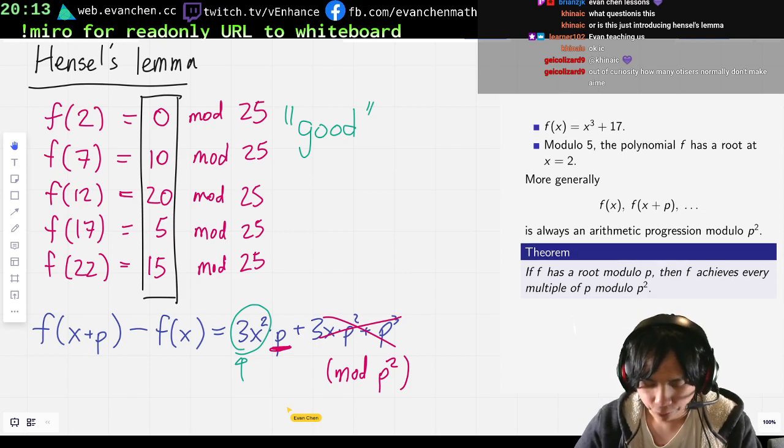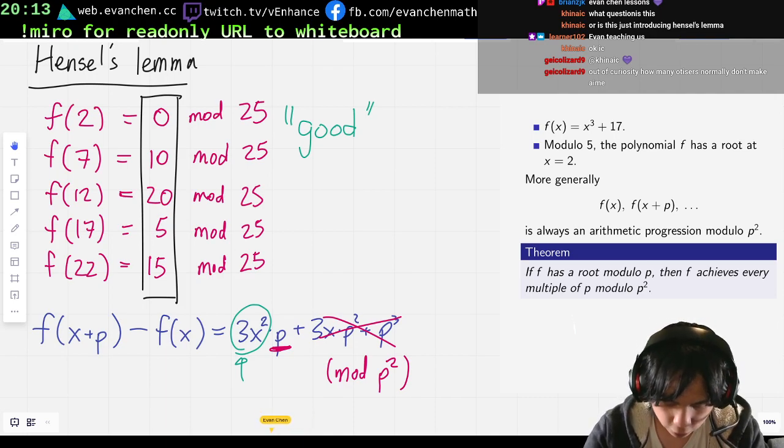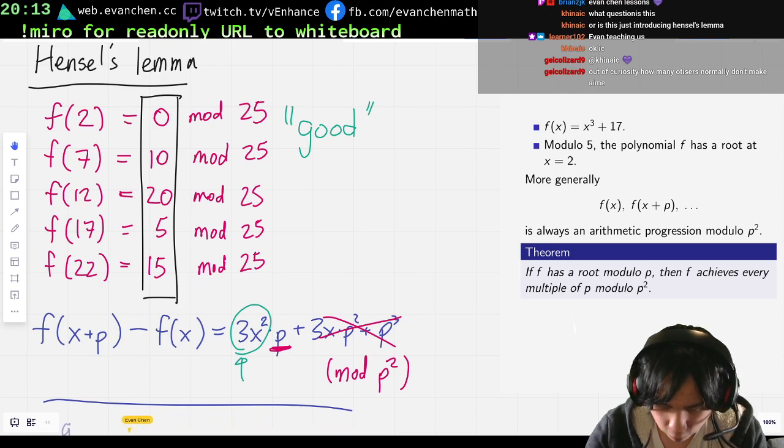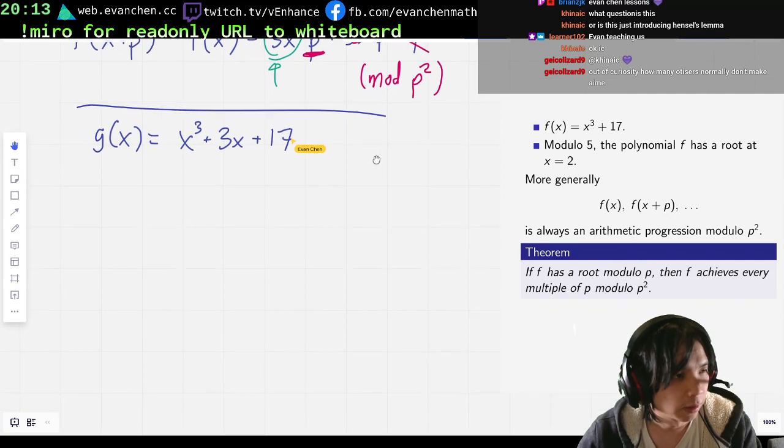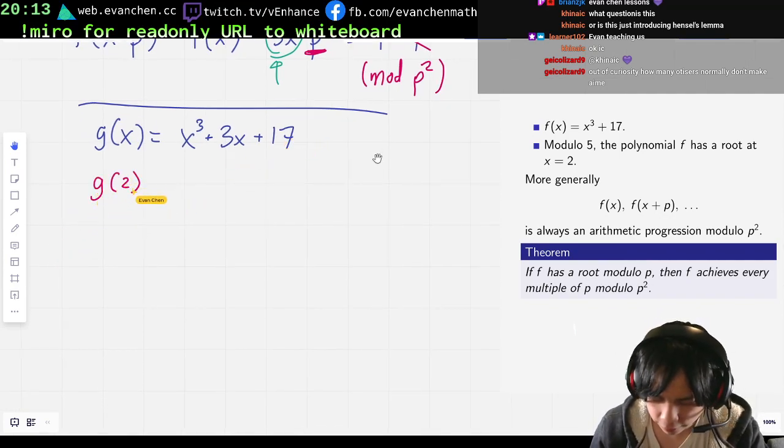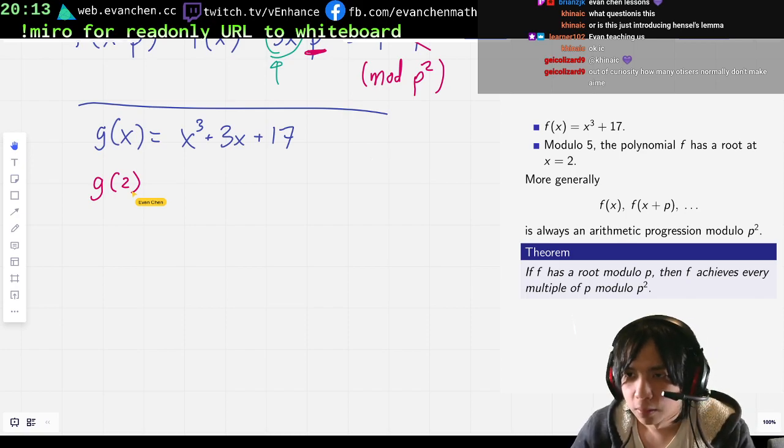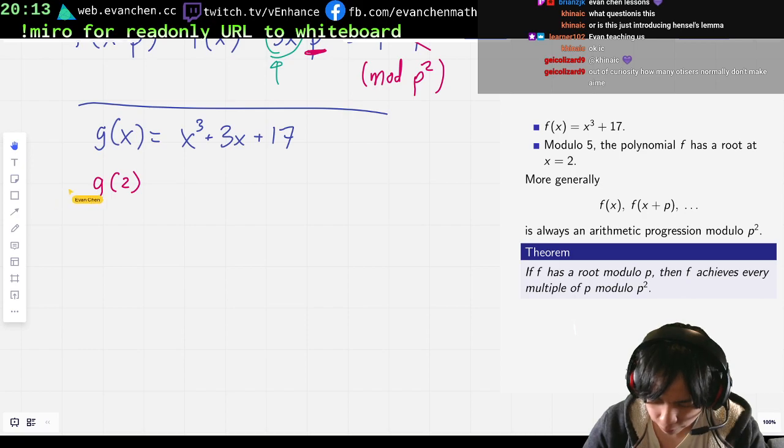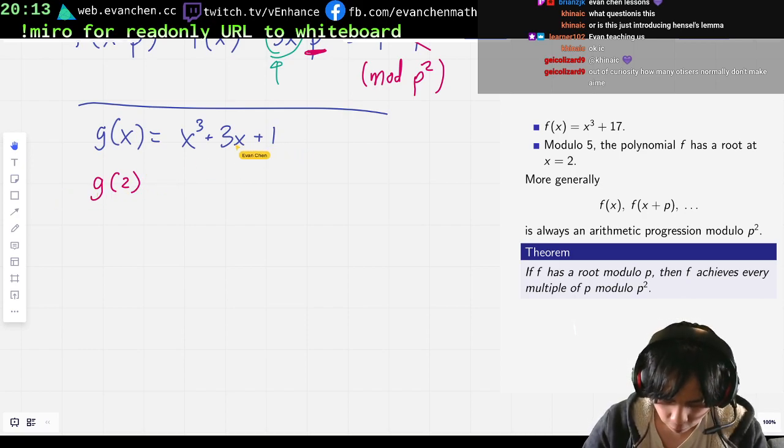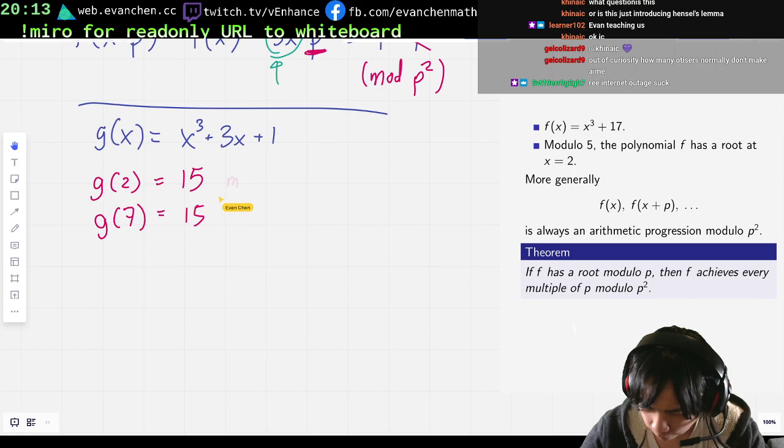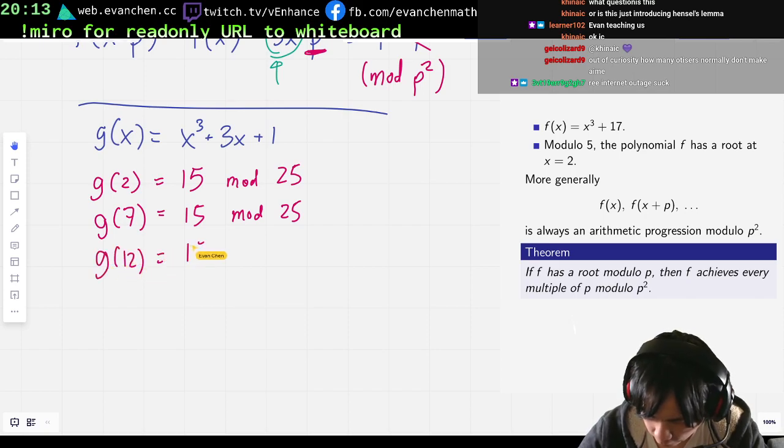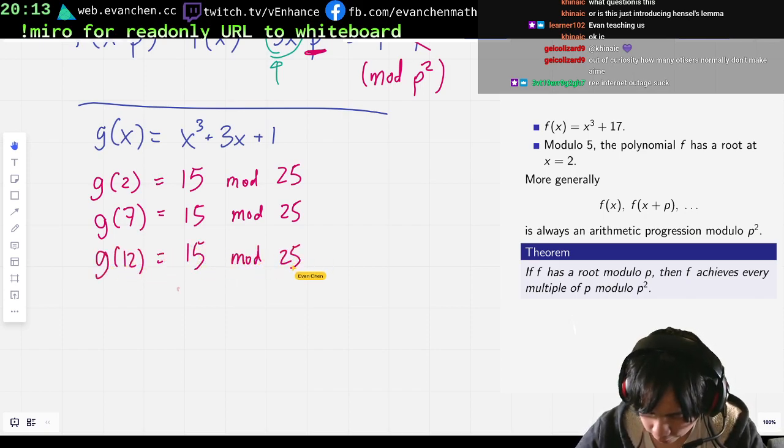And to give a counterexample, I'm going to look at the polynomial g of x equals x cubed plus 3x plus 1. So this polynomial is a little different. And what happens is when I compute g at, so g still has a root at 2. When I compute this, this is 15. G of 7 is 15 mod 25. G of 12 is 15 mod 25 and so on. So they're actually all 15.